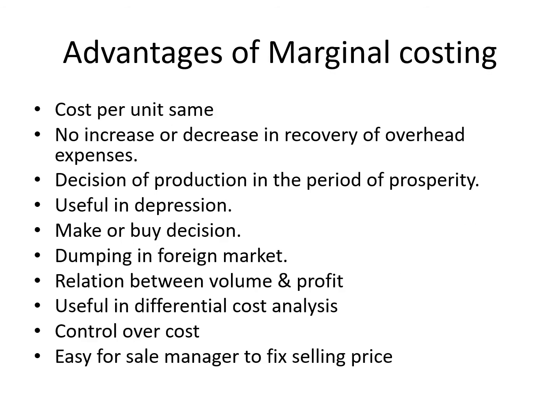Now we will discuss the advantages of marginal costing. First, cost per unit is the same in marginal costing as fixed overheads are not charged to the cost of production — the effect of change in output on cost per unit is avoided. There is no increase or decrease in recovery of overhead expenses, eliminating a large balance left in the overhead control account. When fixed overheads are recovered on a certain basis, they will be either under-recovered or over-recovered due to change in volume of output — such a problem does not arise in marginal costing.